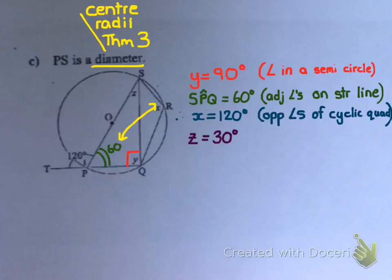Finally, Z is 30 degrees. That is because of the sum of angles in a triangle — I have 60 degrees, my 90 degrees at Y, and Z is the third angle in the triangle.